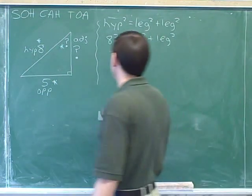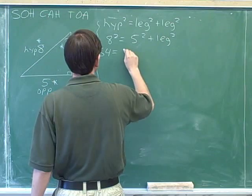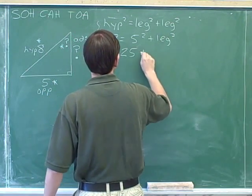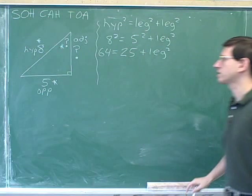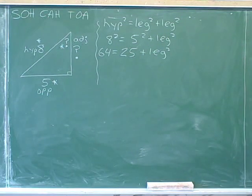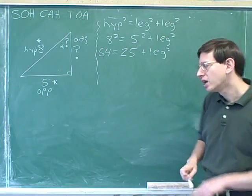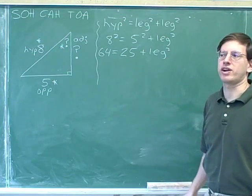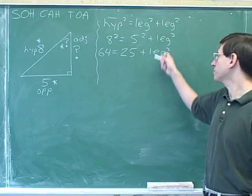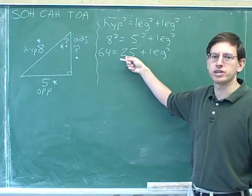8 squared equals 5 squared plus leg squared. Now we can simplify: 8 squared is 64, and 5 squared is 25. So 64 equals 25 plus the leg squared. We have to try to get this leg term by itself, which means we need to get rid of the 25 and then get rid of the squaring. But we can't get rid of the squaring until first we've gotten rid of the 25.